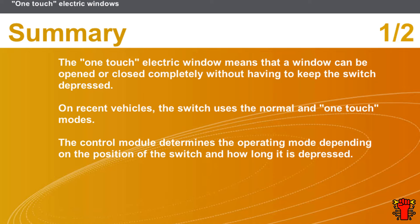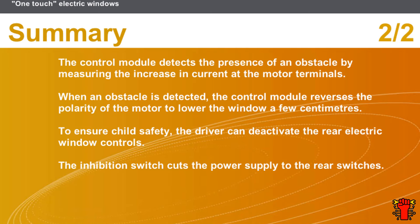In this section we covered the following points: the one-touch electric window means a window can be opened or closed completely without keeping the switch depressed. On recent vehicles, the switch uses normal and one-touch modes. The control module determines the operating mode based on the position and duration of the switch press. It detects obstacles by measuring the increase in current at motor terminals, and reverses motor polarity to lower the window a few centimeters. The driver can deactivate rear electric window controls for child safety via the inhibition switch, which cuts power to the rear switches.